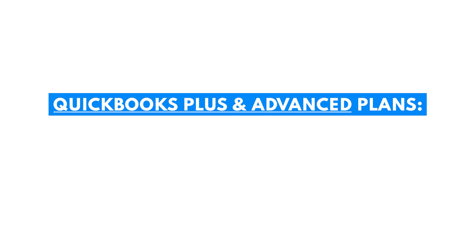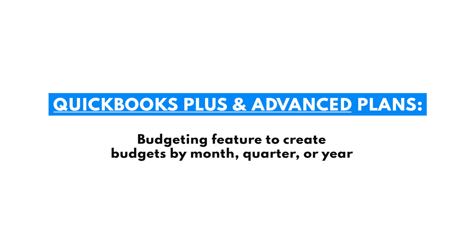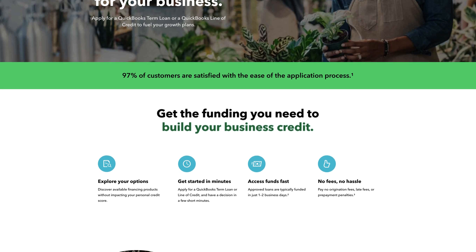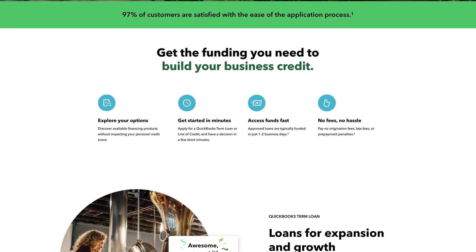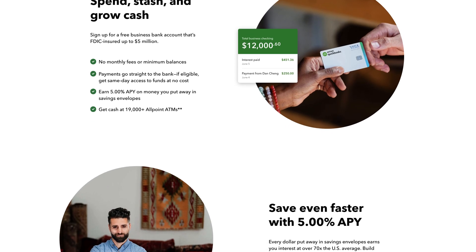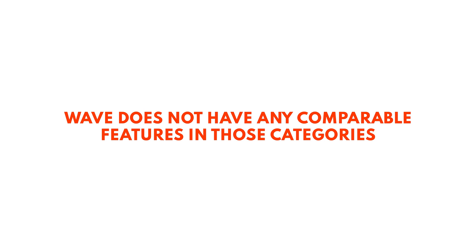We just discussed a few areas where Wave lags behind QuickBooks Online. However, QuickBooks also has a list of features that Wave doesn't have at all. Subscribers of QuickBooks Plus and Advanced plans can access project management tools for tracking time, expenses, and profitability. Subscribers will also have a budgeting feature to create budgets by month, quarter, or year. A time tracking feature is also available to QuickBooks Essentials, Plus, and Advanced subscribers for tracking single activities or creating timesheets. As a QuickBooks Online subscriber, you'll also get access to QuickBooks Capital, a lending platform built right into the software. Another unique feature is QuickBooks Checking, a fee-free checking account with great features like savings envelopes that allow you to earn up to 5% APY. Unfortunately, Wave does not have any comparable features in those categories.